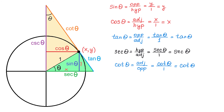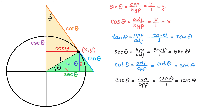The last function left is cosecant. By definition, cosecant of theta is the hypotenuse divided by the opposite. In this yellow triangle, the hypotenuse is cosecant of theta, and the side opposite of angle theta is 1. Then, cosecant of theta divided by 1 gives us cosecant of theta. So this line segment represents the value of cosecant of theta. And these are all six trigonometric functions on the unit circle.